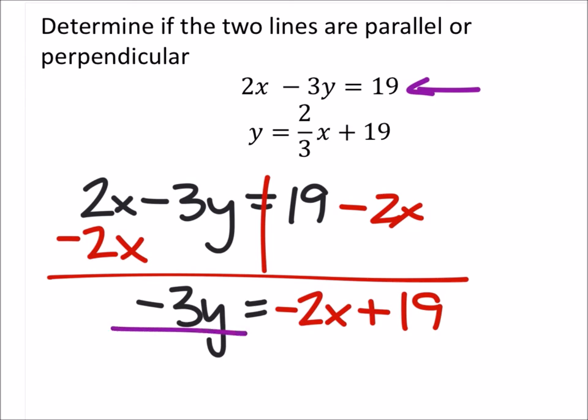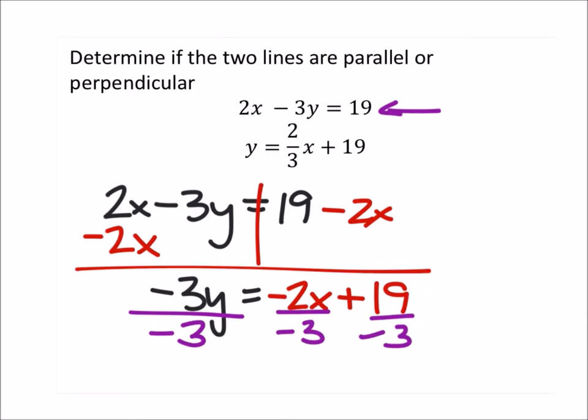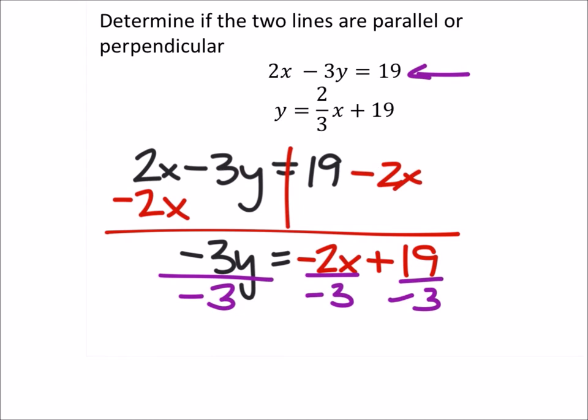So I want the y isolated, or by itself, so I'm going to divide both sides by negative 3. And, with more space, I get y equals 2 thirds x minus 19 thirds.